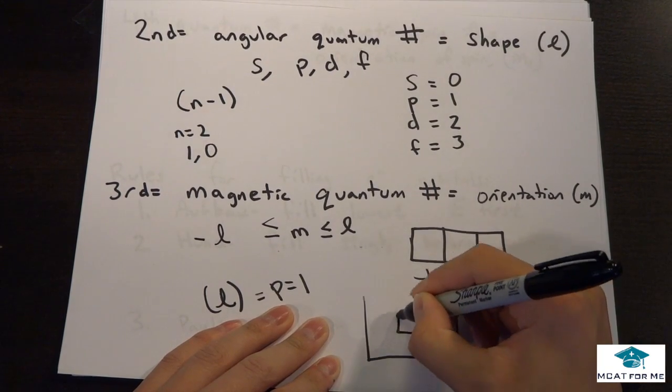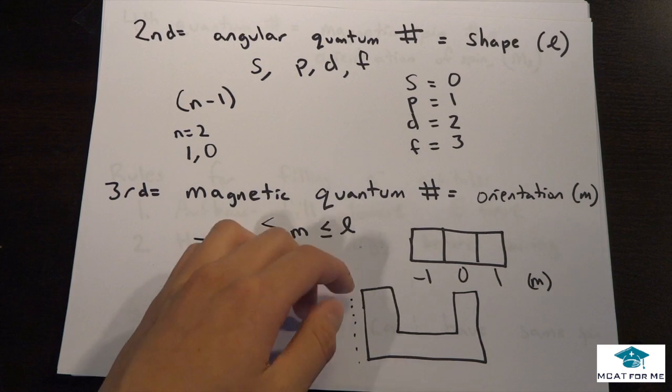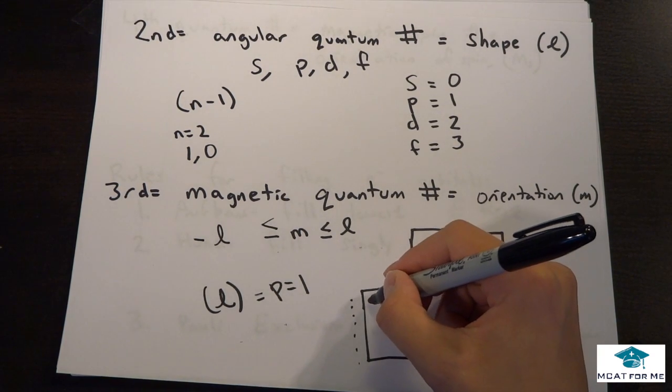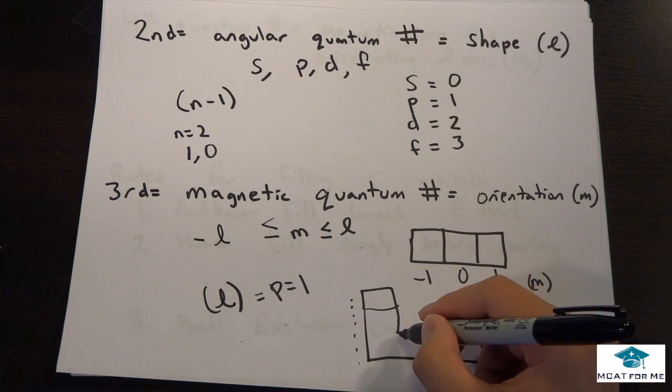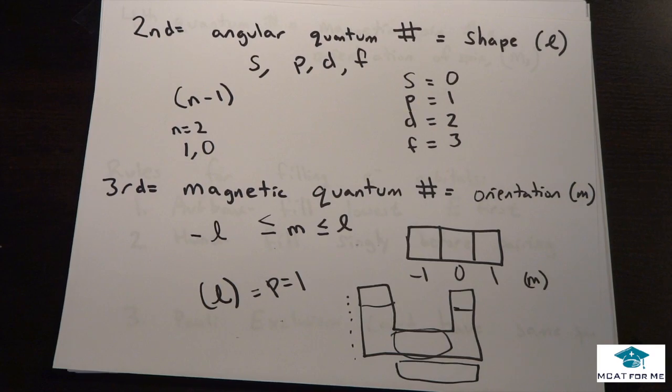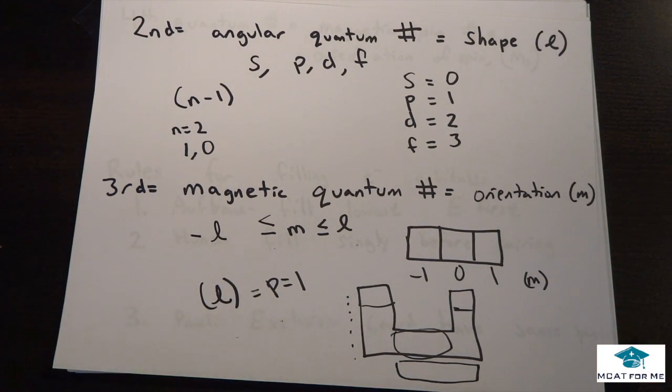So pretty much what we did is we were able to define, the first quantum number gave us the different energy levels through the periodic table. And then the secondary quantum number defined whether it's in the S block, the P block, the D block, or the F block. And then once we got further, now we have to define which orbital itself is in, which orbital that electron is in.